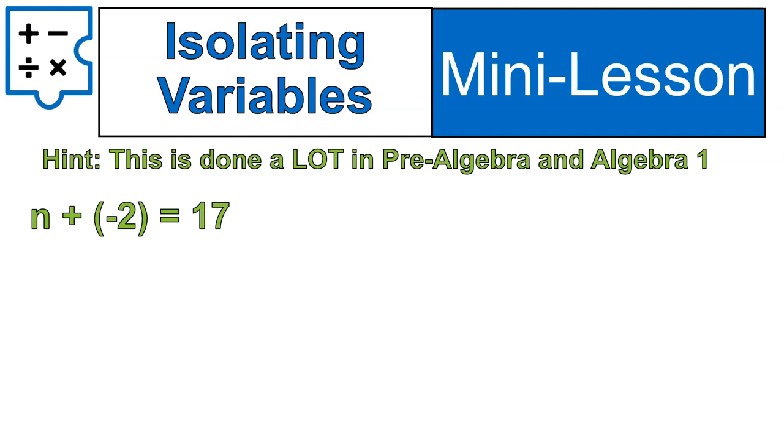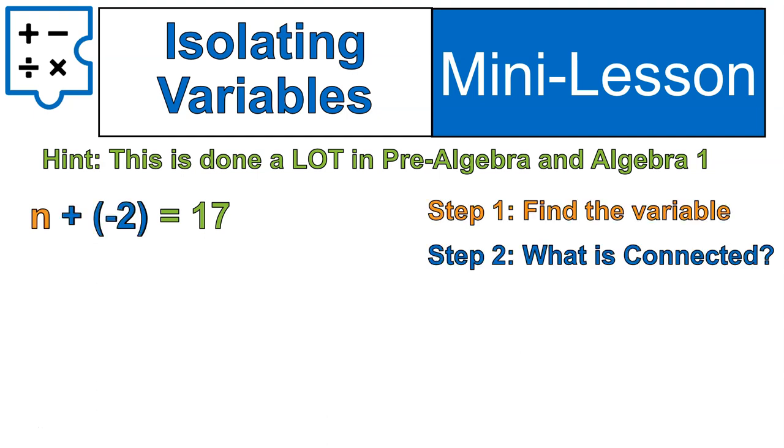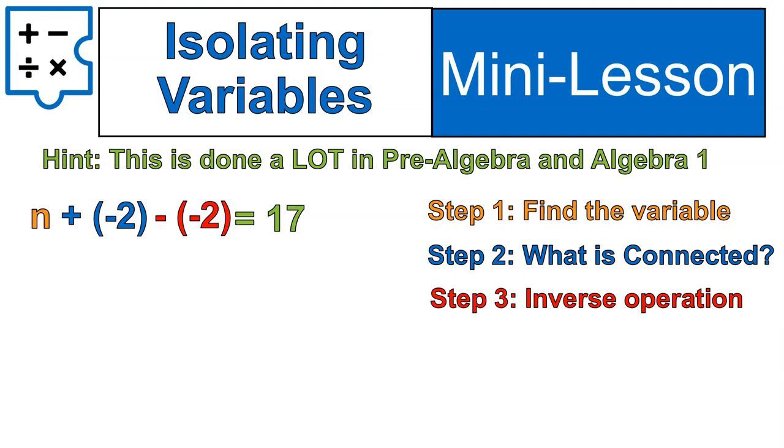Hey, welcome back. Try that out. Follow those steps. What's my variable? n. What's connected to it? Plus negative 2. I'm going to do the inverse of that. Let's give ourselves some space. The inverse or the opposite of plus negative 2 would be minus negative 2. And I do that to both sides of the equation.